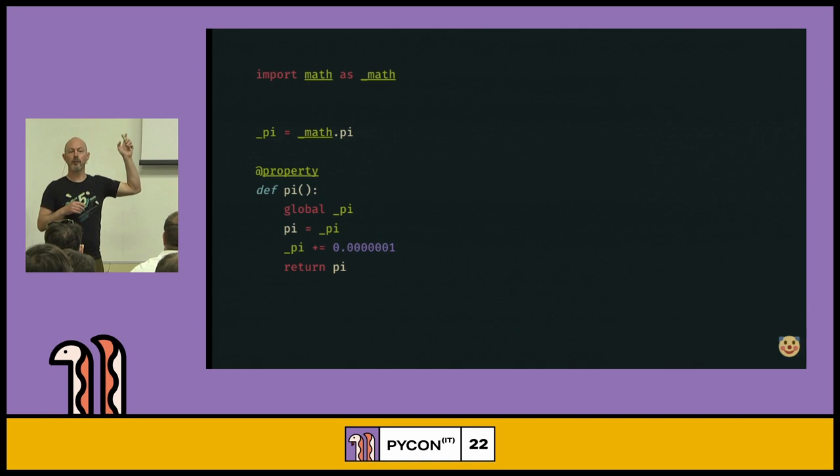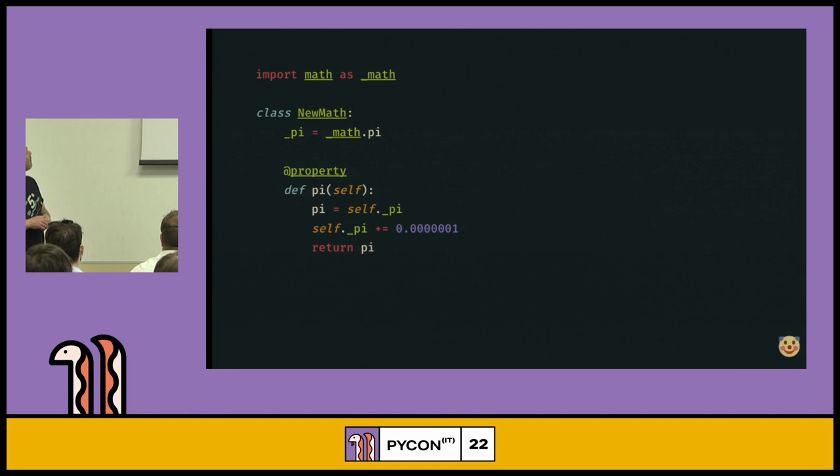So we've probably all used this. The only problem is that this is not going to work. So you can't use the property decorator on a top-level function. It only works with classes and methods. So I guess we have to work with this restriction. So I'm just going to take that, and I'm going to put that in a class called new_math. Now we don't have a global anymore, so that's quite nice. We can just get _pi out of self. But essentially, this works the same way.